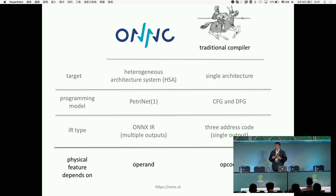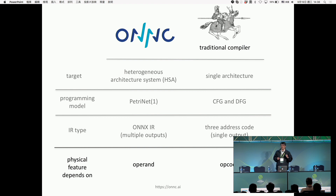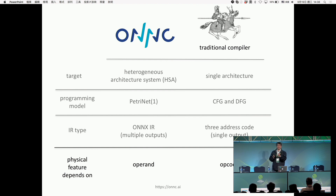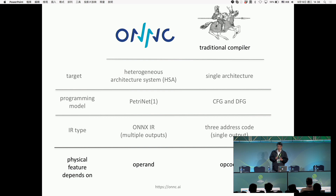Another reason why we need to reinvent the compiler is this: if you give us a convolution, how many cycles it needs does not depend on its opcode — it only depends on the input matrix dimensions. But many compiler algorithms, like live-range analysis or memory allocation algorithms, have a basic assumption: every instruction has fixed physical features. For example, an instruction takes about two cycles and uses about three registers. But in AI, every layer's physical features depend on its operands, not the opcode. This pushes us to reinvent almost all algorithms.